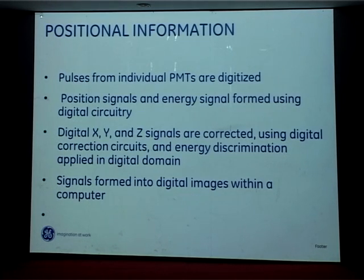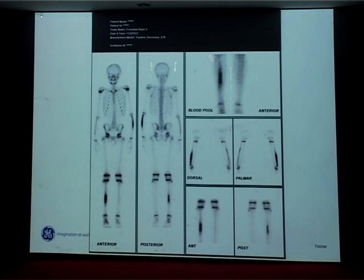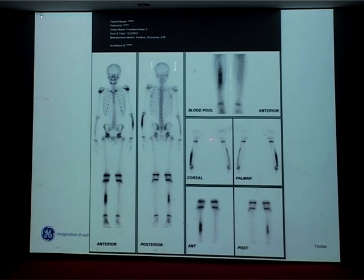Digital circuits with XYZ signals and correction circuits decide in the digital domain where the signal is coming from and perform image formation. After the injection and all this electronics processing, a bone scan is produced. A radioisotope or tracer specifically taken up by bones is injected, and you can visualize the entire skeletal body — here an area of increased uptake in the arm indicates a problem.